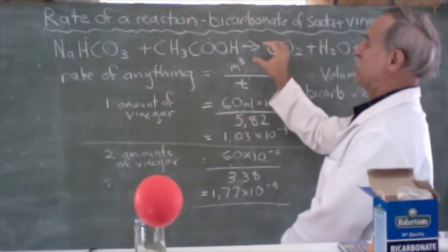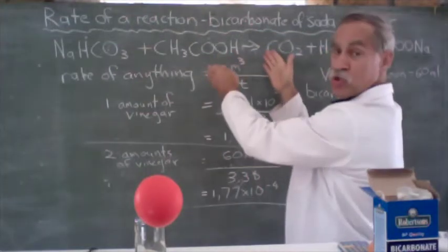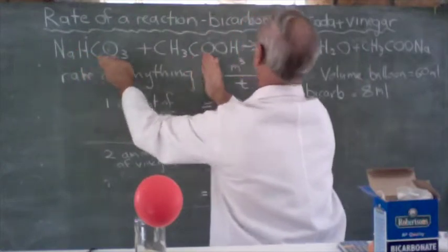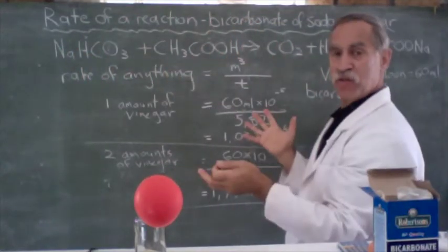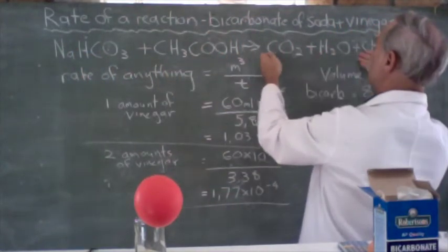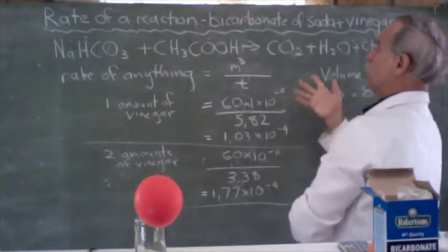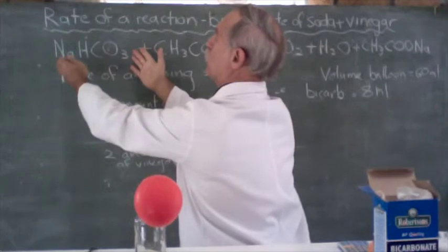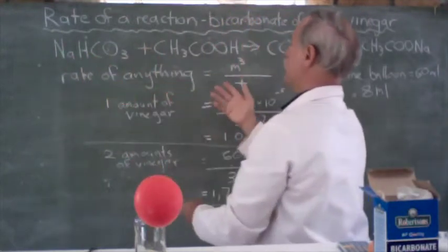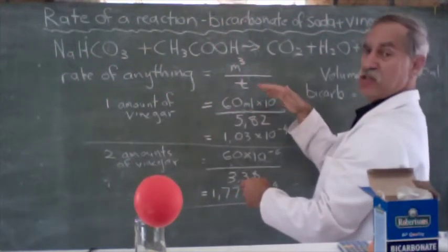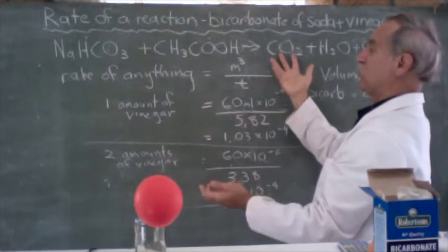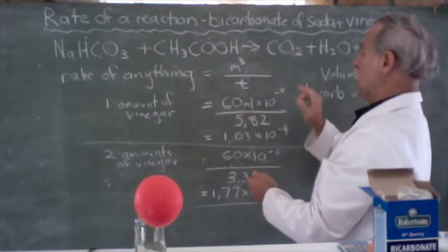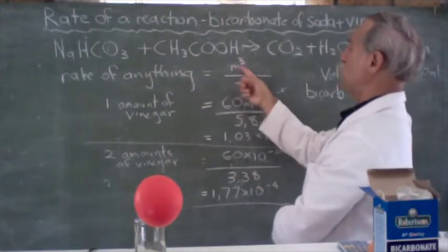Rate of anything is what is produced or used up. So, we have our reactants, we have our products. We can measure the rate of reaction by producing something. And, in this case, we produced CO2. Or, we could measure the rate of the reaction by what we use up. In this case, we were increasing our CO2. We started with no CO2 and we ended up with some. So, that's an increase. And so, what is the unit? Well, it was meters cubed.